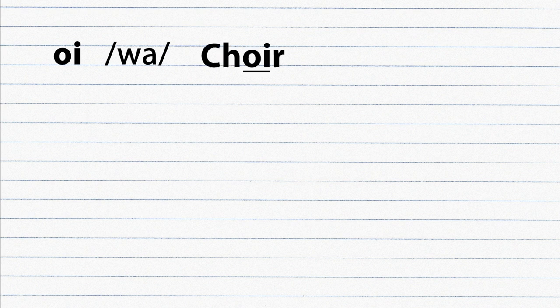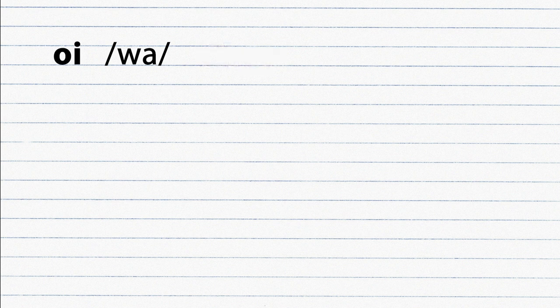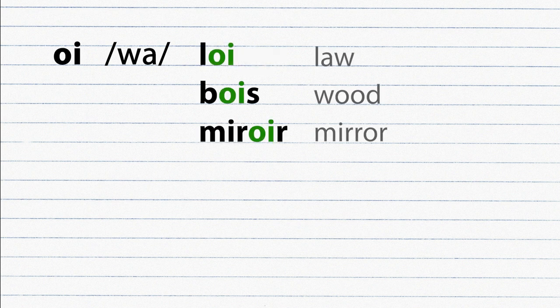OI is pronounced as WA. Although not very accurate, but a quick way to remember this word is by remembering the English word choir, where in this word, the OI is pronounced as WA. Loi, bois, miroir.